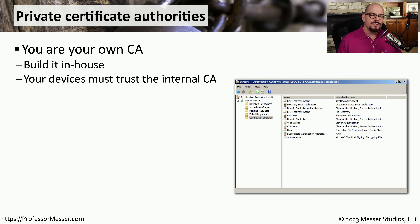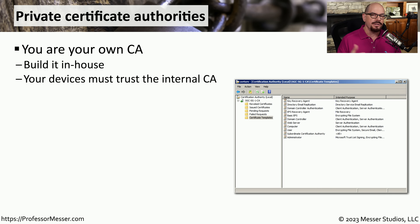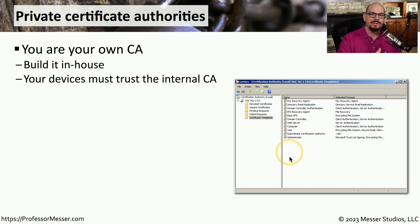So far, we've been talking about using a public CA that is built into everyone's browser to provide trust. But if you have your own internal applications and internal web servers that will only be connected to by people inside of your organization, then you can be your own certificate authority. For this to work, we would install our own certificate authority software inside of our organization and then take the public certificate for that certificate authority and install it on everyone's computer inside of our organization.